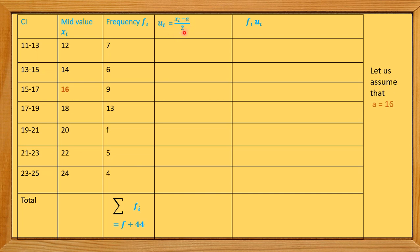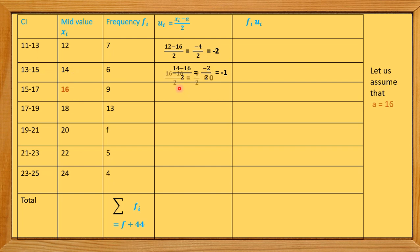We take a = 16 as the assumed mean. Then ui = (xi − a) / 2. So: for x=12, u = (12−16)/2 = −4/2 = −2; for x=14, u = (14−16)/2 = −1; for x=16, u = (16−16)/2 = 0; for x=18, u = (18−16)/2 = 1.